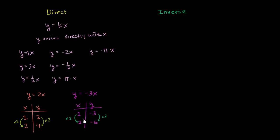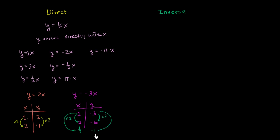And if you go the other way — say x = ⅓ — then y = -3 × ⅓ = -1. To go from 1 to ⅓ we divide by 3, and to go from -3 to -1 we also divide by 3 — we scale down by a factor of 3. So whatever direction you scale x, you get the same scaling direction in y. That's what it means to vary directly.